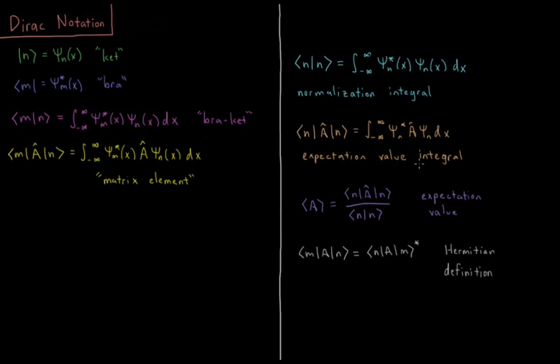For an expectation value integral, we have n A n for that matrix element, that expectation value integral, integral minus infinity to infinity, psi n star times A acting on psi n.